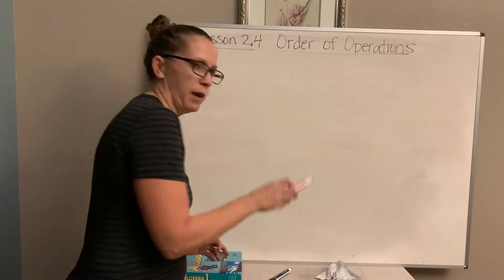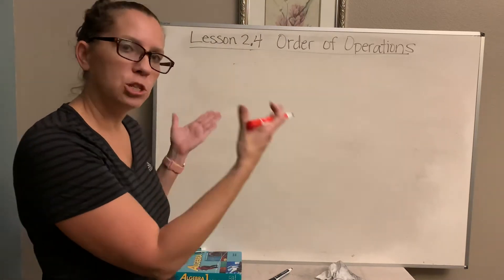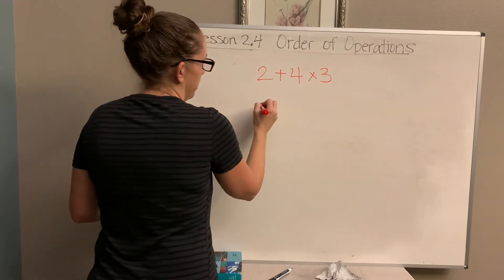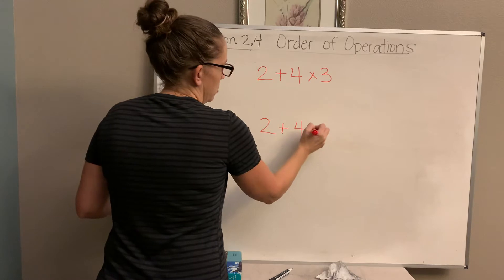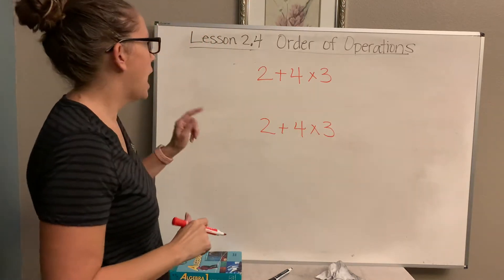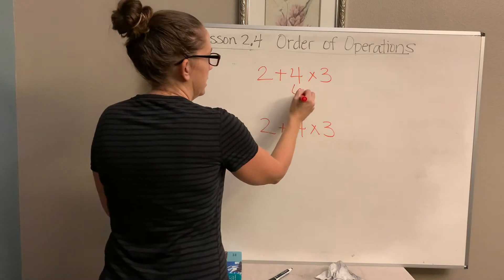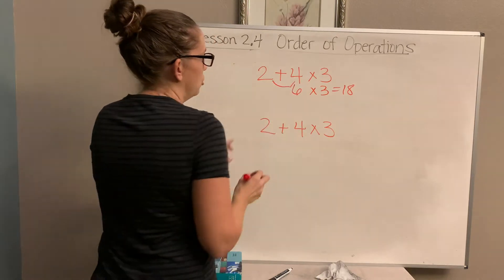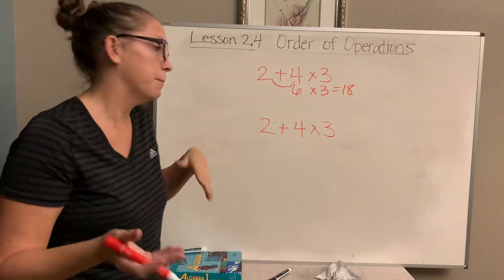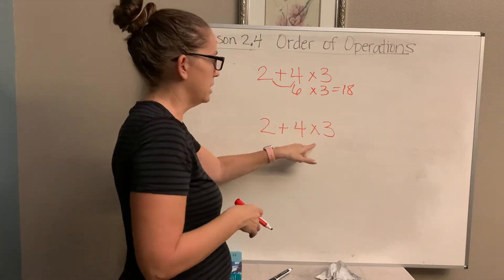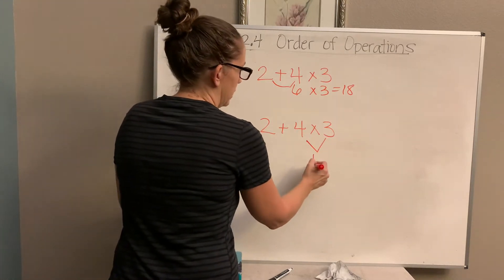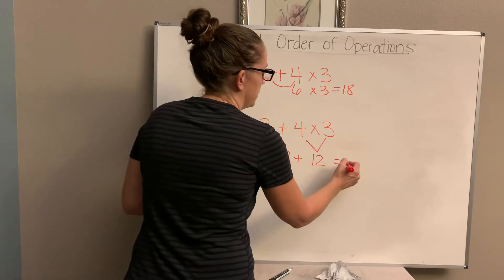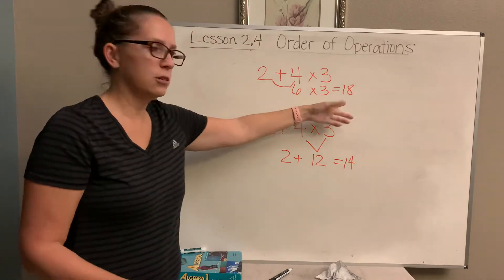For example, I'm going to do this in red because I don't want you to even write this down — I want you to just pay attention. If I had 2 plus 4 times 3, if I were to do 2 plus 4 first, that's 6, and then times 3, I would get 18. But over here, I'm going to do 4 times 3 first, which is 12, and then add the 2, so I get 14. Those were the exact same problem, but I got two different answers.